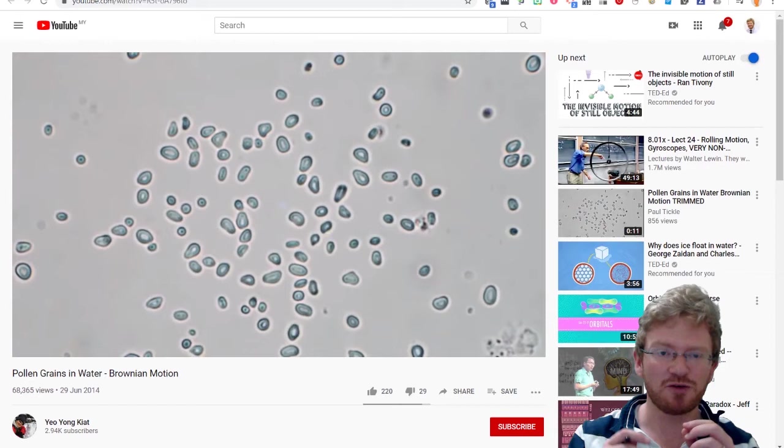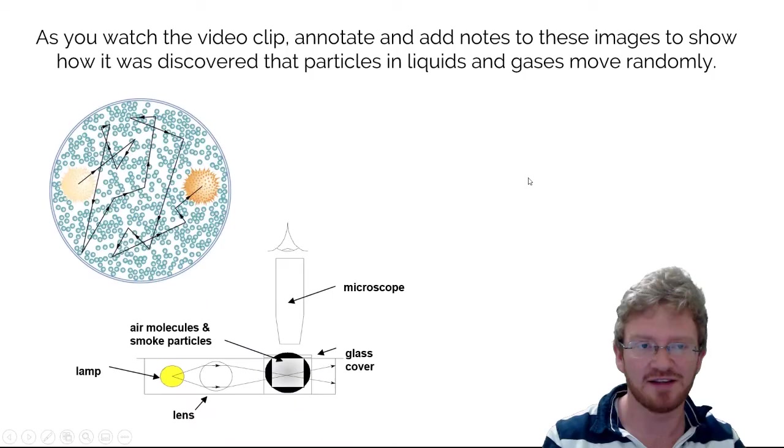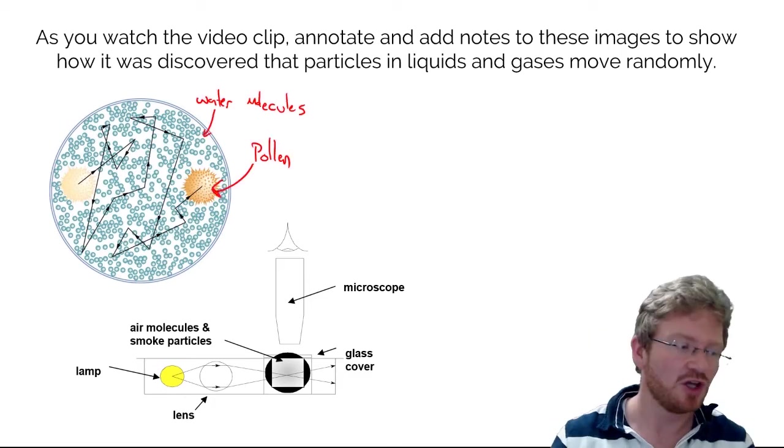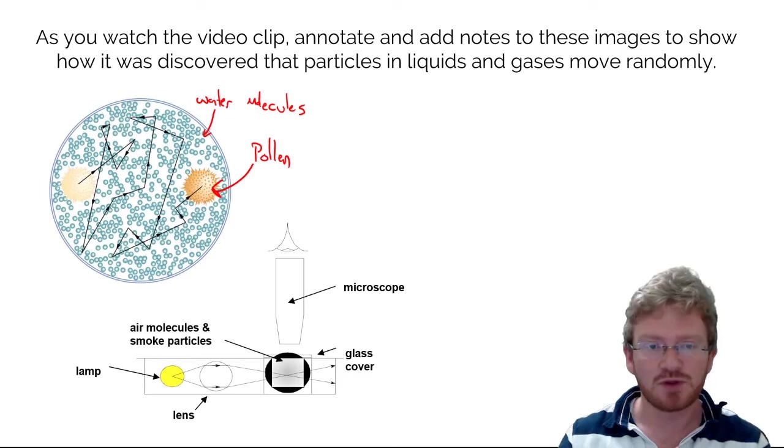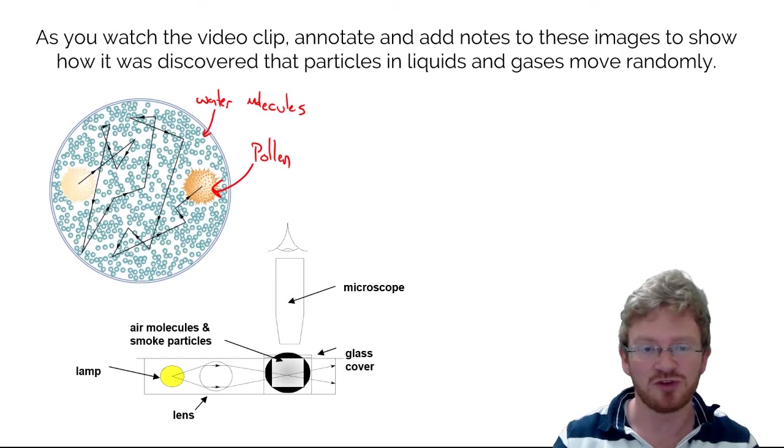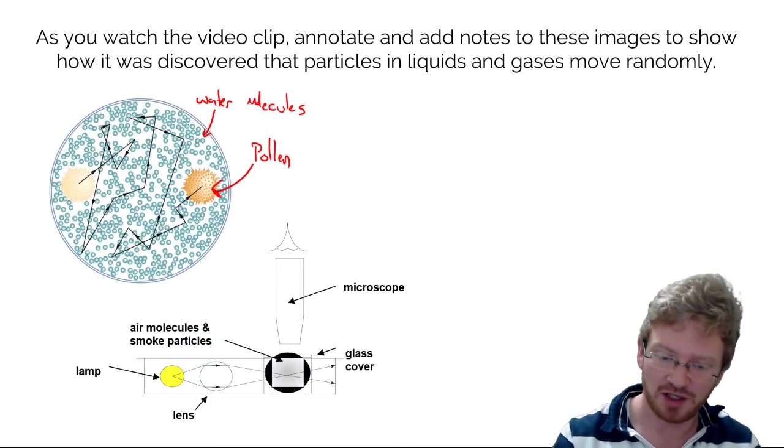So what we want to do as physicists is understand the reason for why that happens. This is another example of it. What we've drawn here is my pollen grain - it's nice and large - and surrounding it are water molecules. In the videos that you saw, obviously the water molecules are far too tiny for us to make them out as individual particles, but we know they're there. Another way of showing this is with something called a smoke cell.